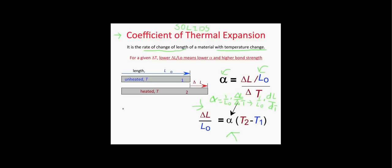Let's do a sample calculation. Our original length is 5 cm, our change in length is 1 cm, and our change in temperature is 500 degrees Celsius. Using the equation, the change in length divided by the original length equals alpha times the change in temperature: 1 cm divided by 5 cm equals alpha times 500 degrees Celsius. Dividing both sides by 500, we get alpha equals 4 × 10⁻⁴ per degree Celsius.